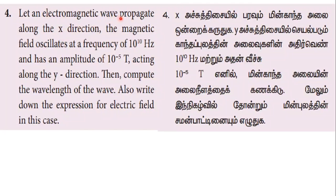Let an electromagnetic wave propagate along the x direction. The magnetic field oscillates at a frequency of 10^10 Hz and has an amplitude of 10^-5 Tesla, acting along the y direction. Then compute the wavelength of the wave. Also write down the expression for the electric field in this case.